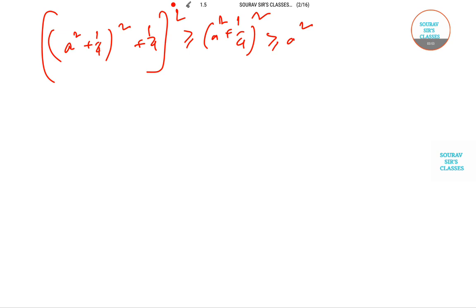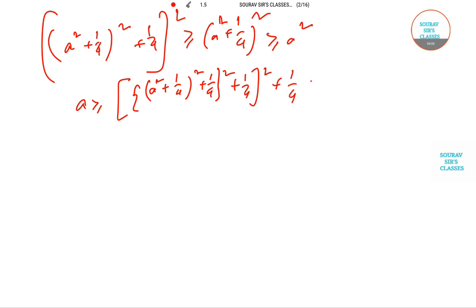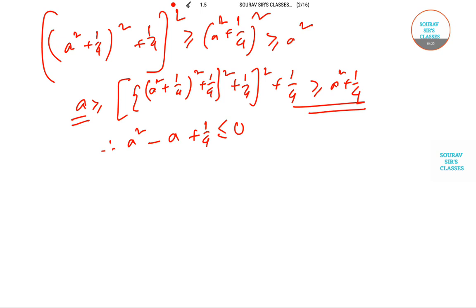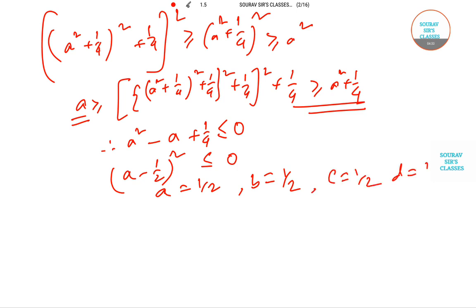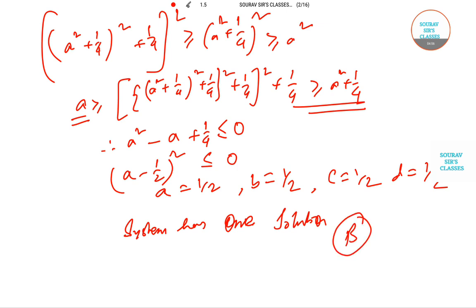From a² - a + 1/4 ≤ 0, we get (a - 1/2)² ≤ 0, which means a = 1/2. Similarly, b = 1/2, c = 1/2, and d = 1/2. Putting all these values back satisfies (a - b)² = 0 ≤ 1/4, and all conditions are met. Therefore, the system has exactly one unique solution. The answer is option B.